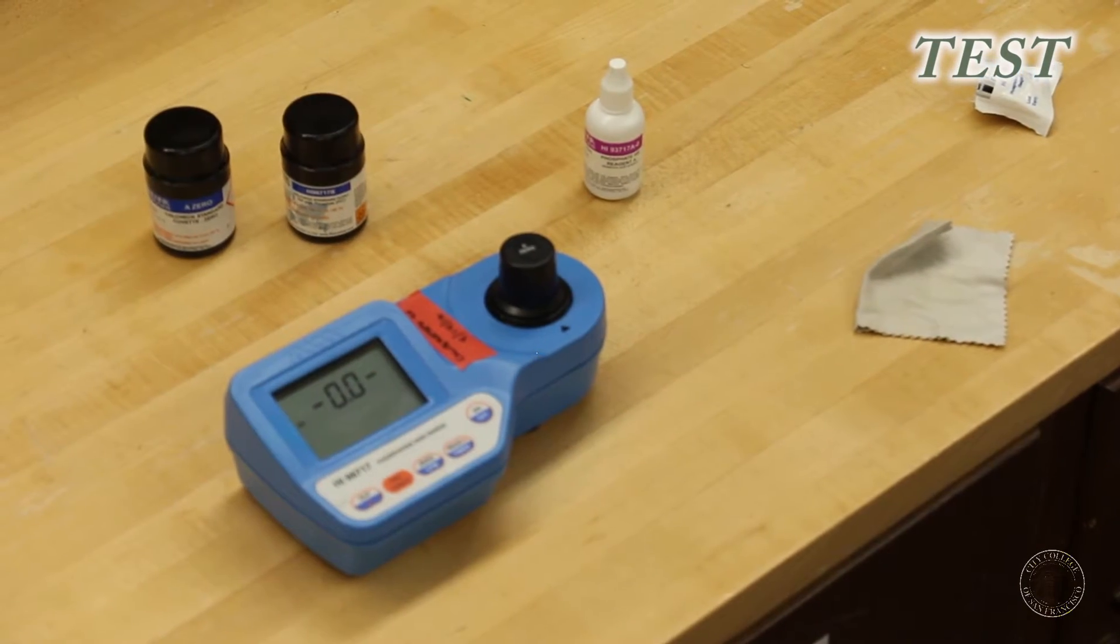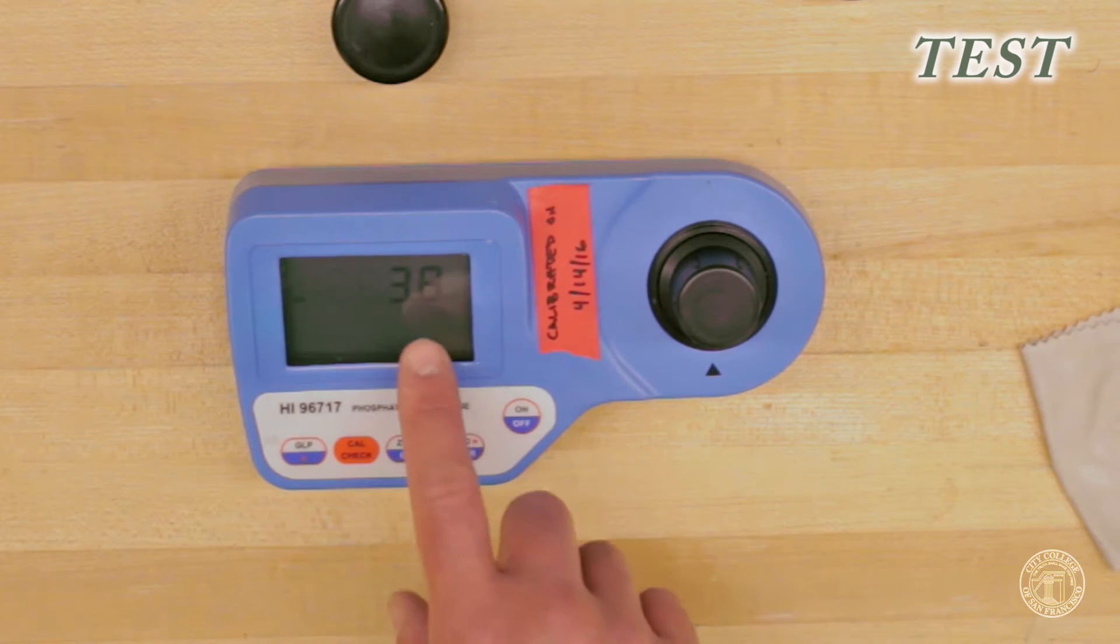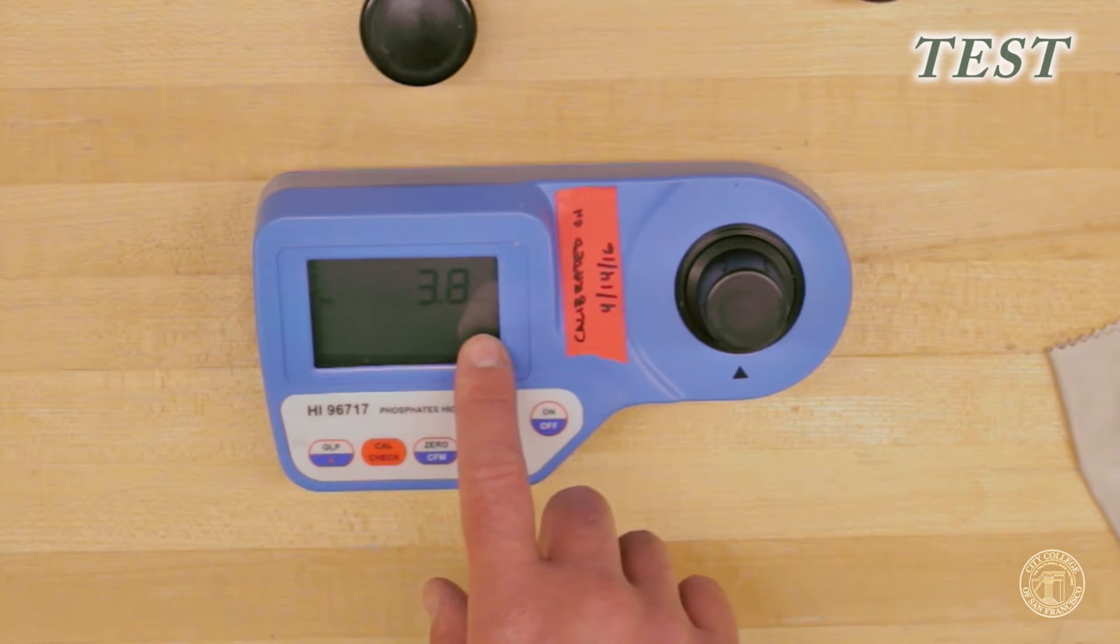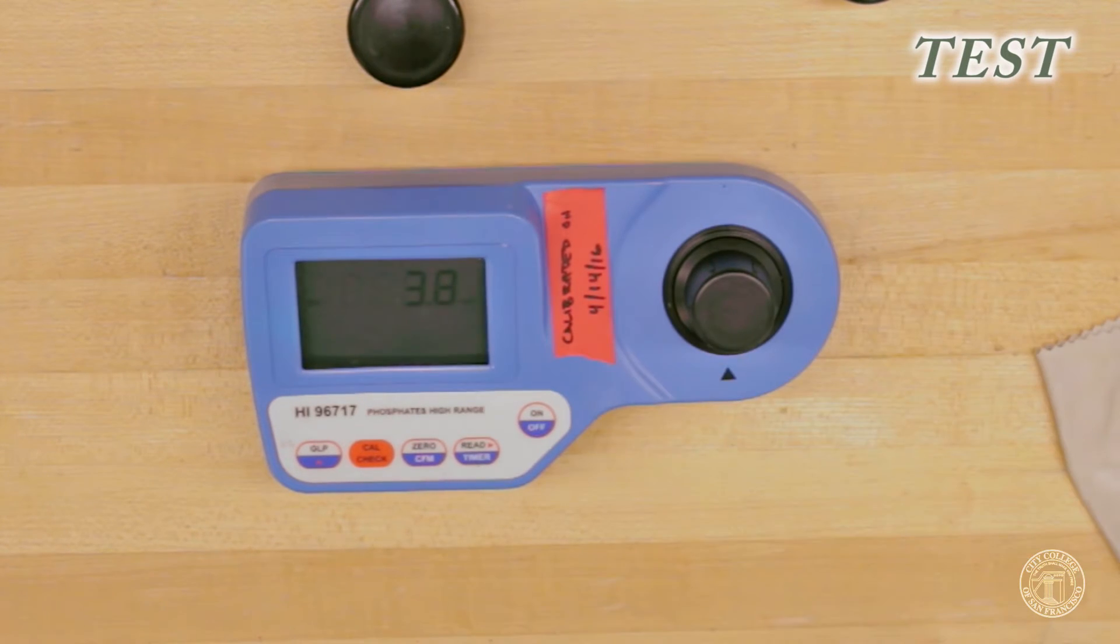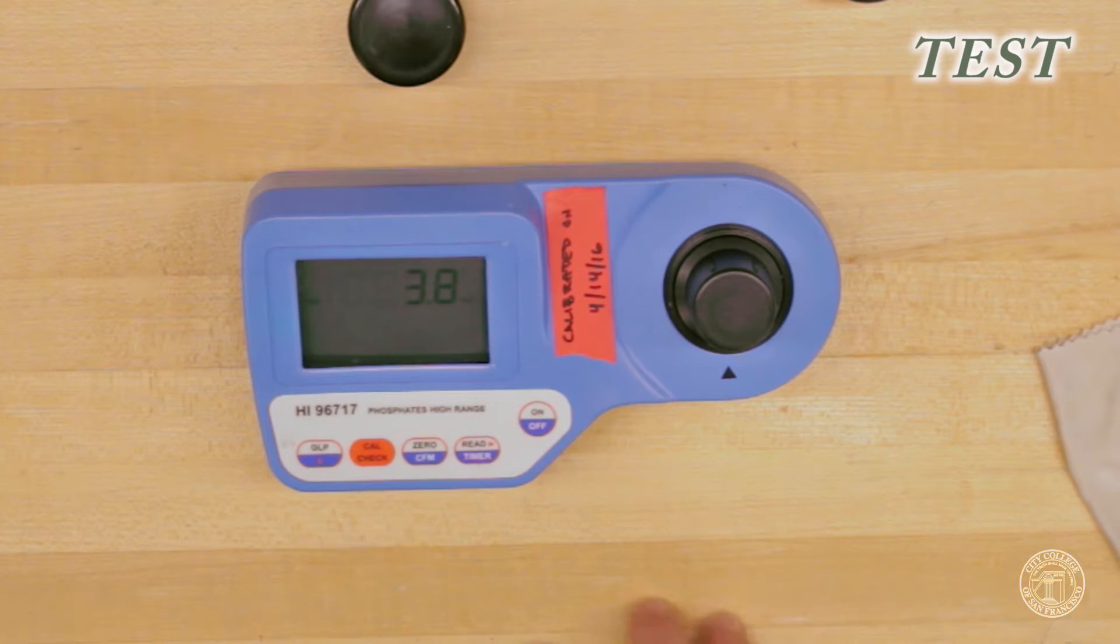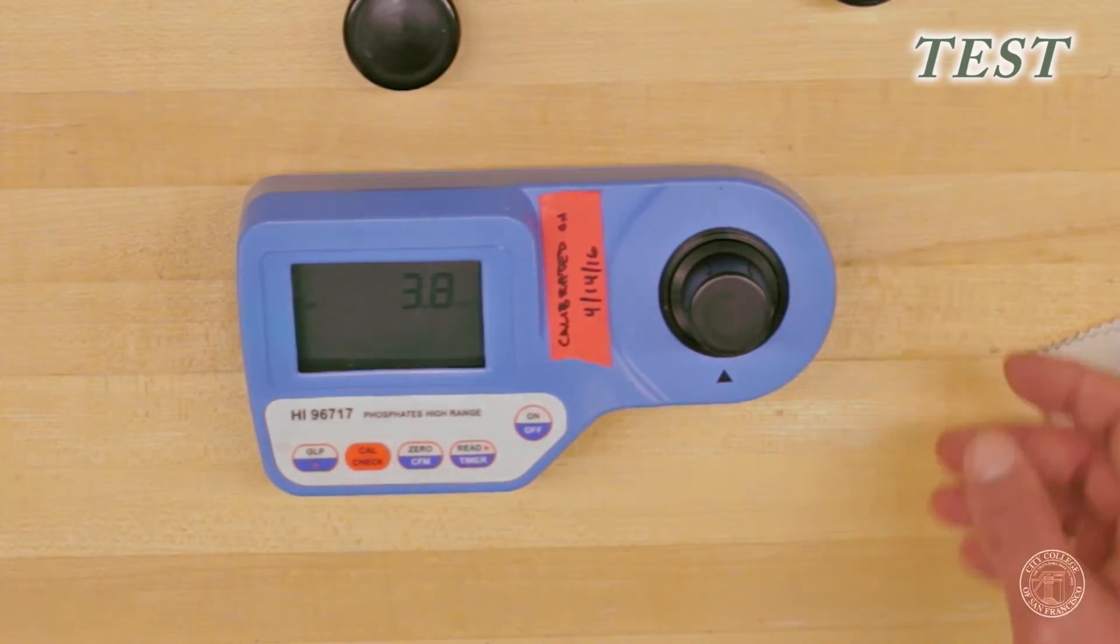And now our timer is done. After five minutes, it will read the sample here for us. And this is tap water, so thankfully we have a very low reading of 3.8 milligrams per liter. And that is the steps to calibrate, validate, and then take a sample with the Hanna Phosphate High Range HI-96717 meter. Thank you.